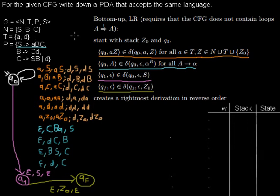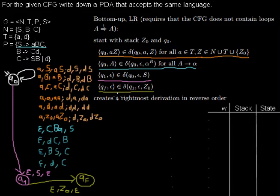Now I'd like to show you how the pushdown automaton we constructed in the last video processes words. The definition says it works like a bottom-up parser and it creates a rightmost derivation in reverse order. It will be a little bit complicated but I'll do my best to make it clear for you.